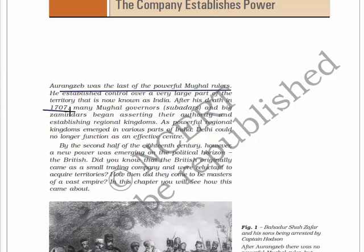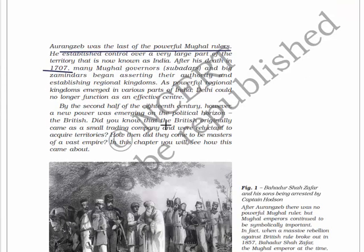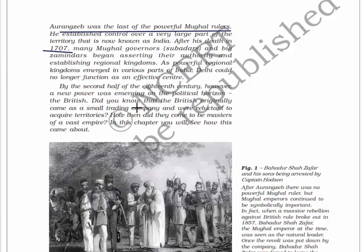many Mughal governors called subidas and big zamindars began asserting their authority and establishing regional kingdoms. As powerful regional kingdoms emerged in various parts of India, Delhi could no longer function as an effective center. By the second half of the 18th century, a new power was emerging on the political horizon - the British, who originally came as a small trading company and were reluctant to acquire territories.